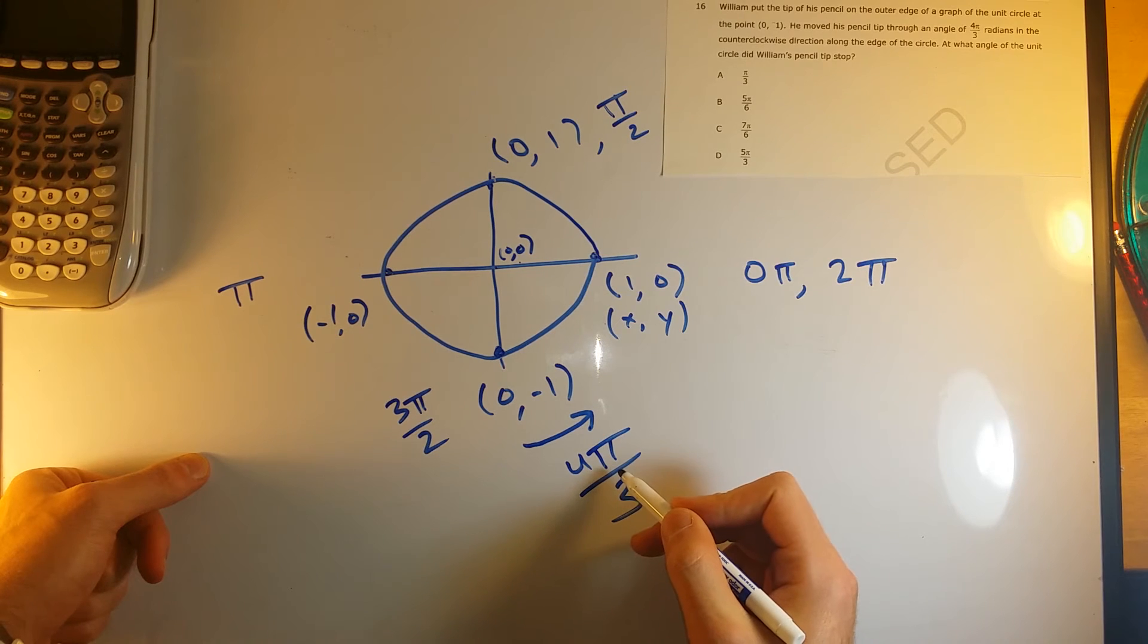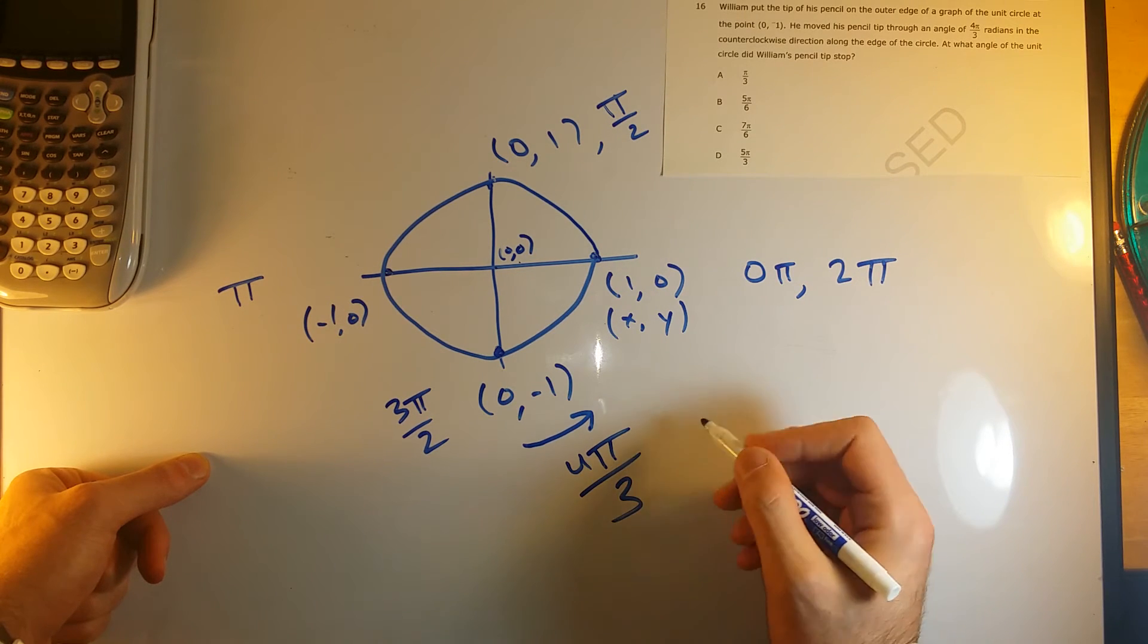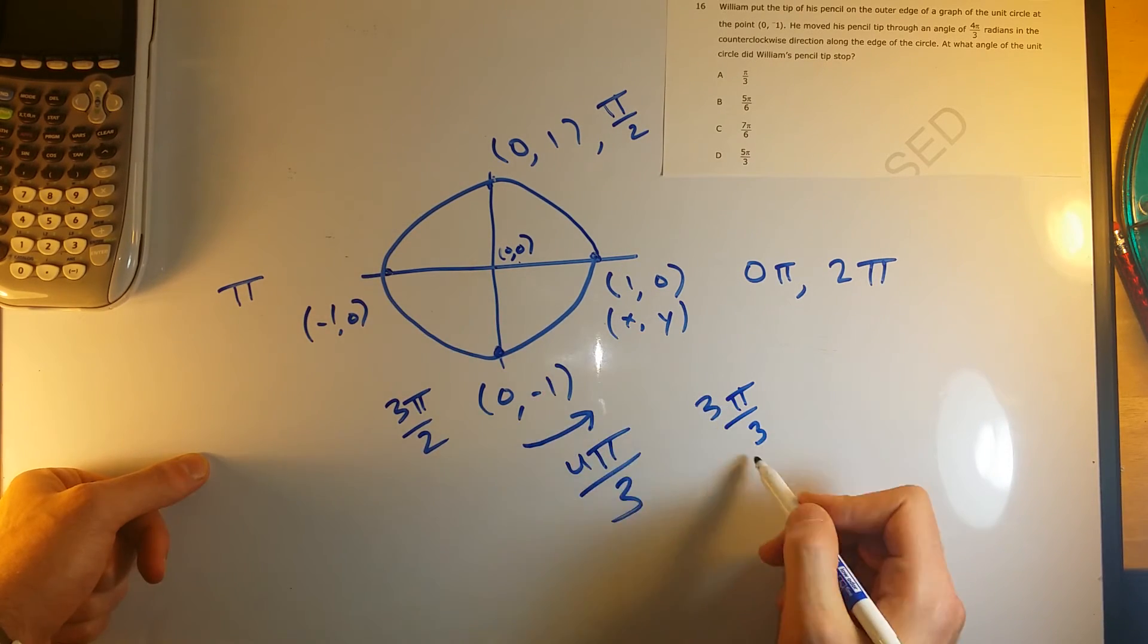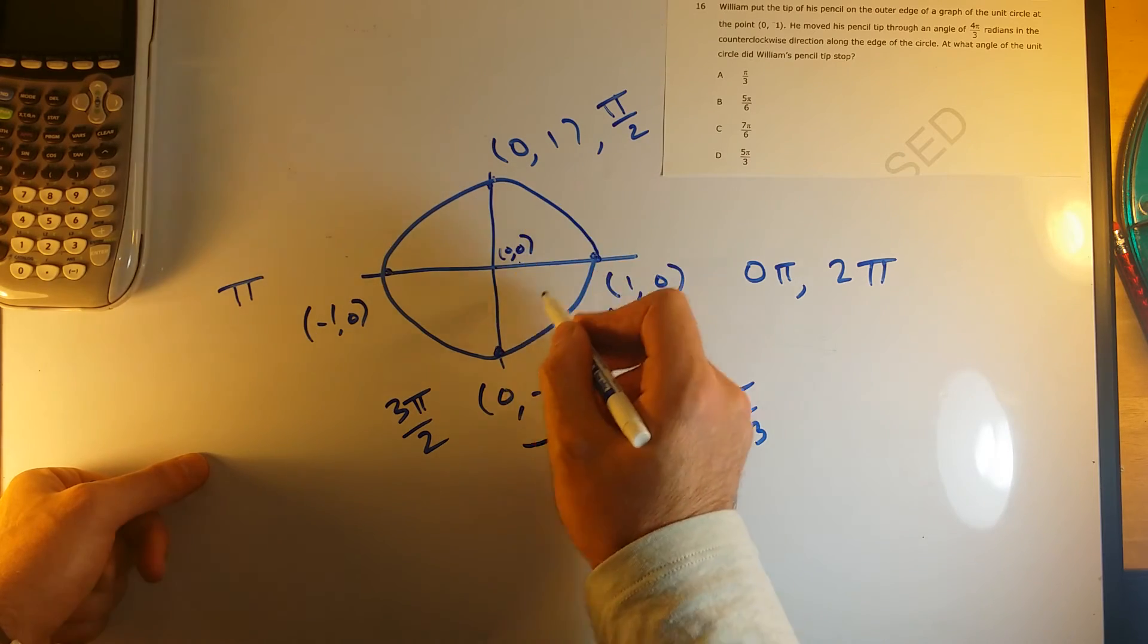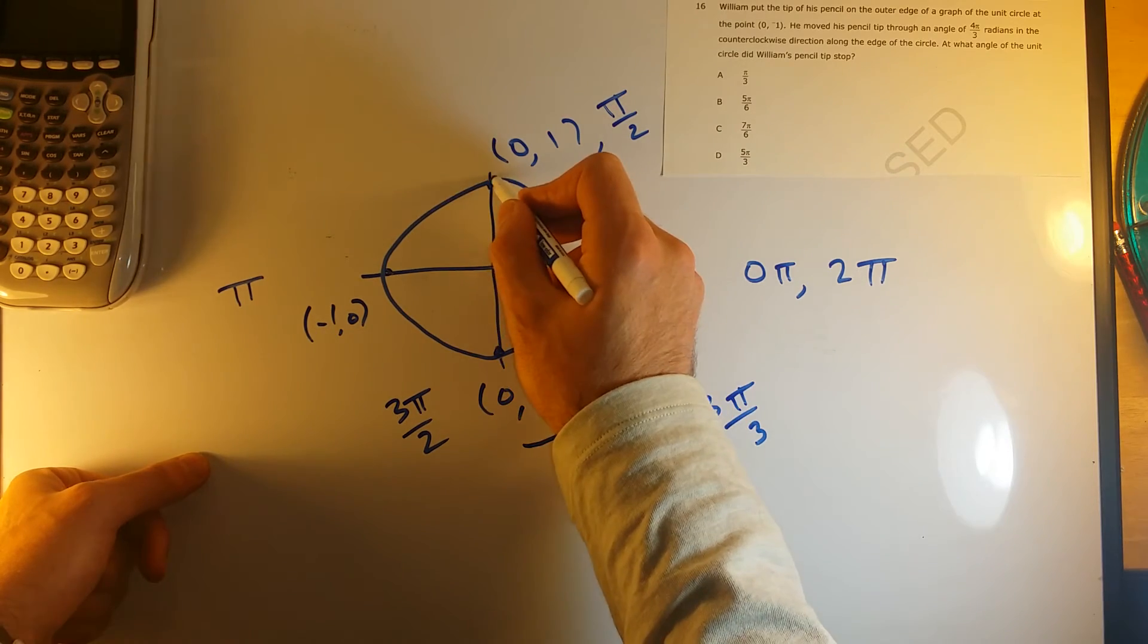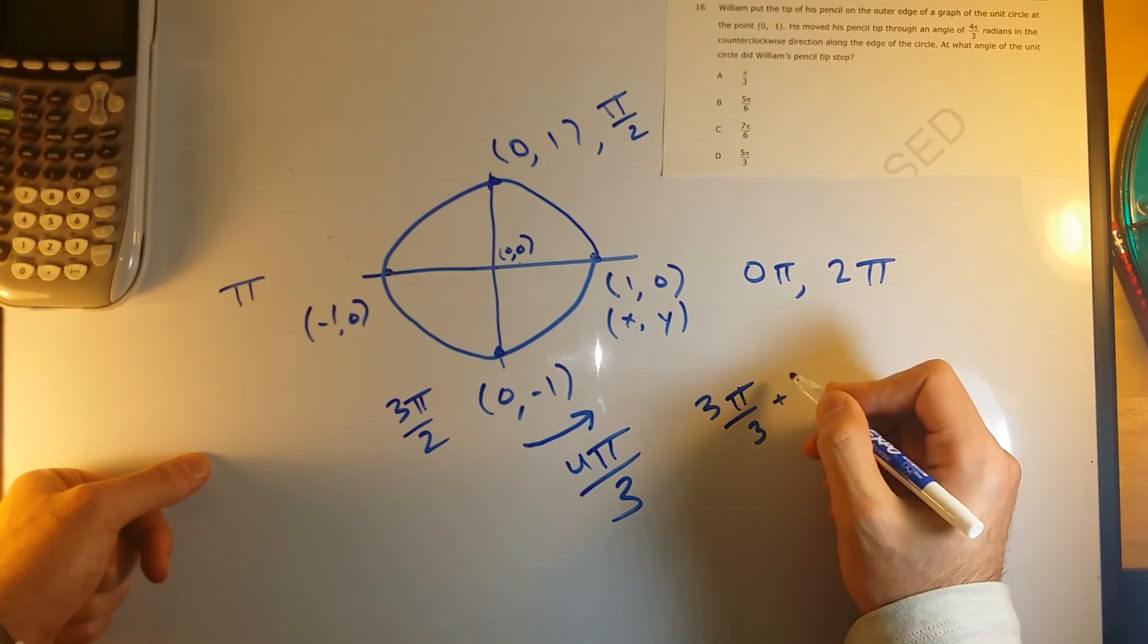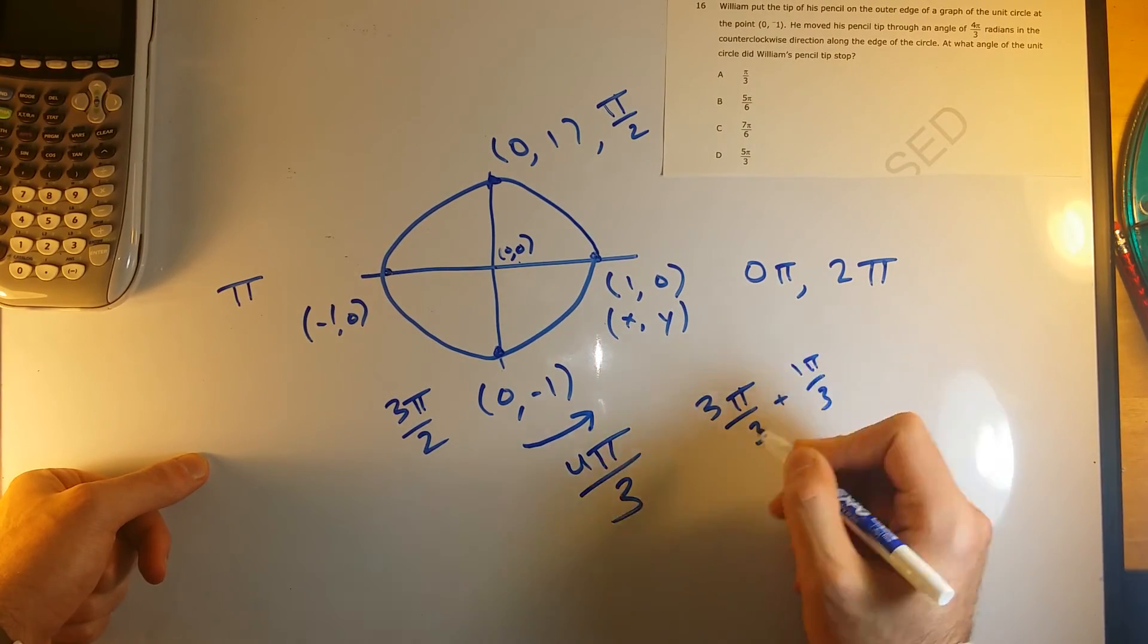Okay, so 4π over 3 in that direction. So if I were to go 4π over 3, that means 3π over 3 would take me, that's just 1π, that would take me 180 degrees. So that would take me to this point, to this location, that's 3π over 3, and I would still have 1π over 3 still to go.